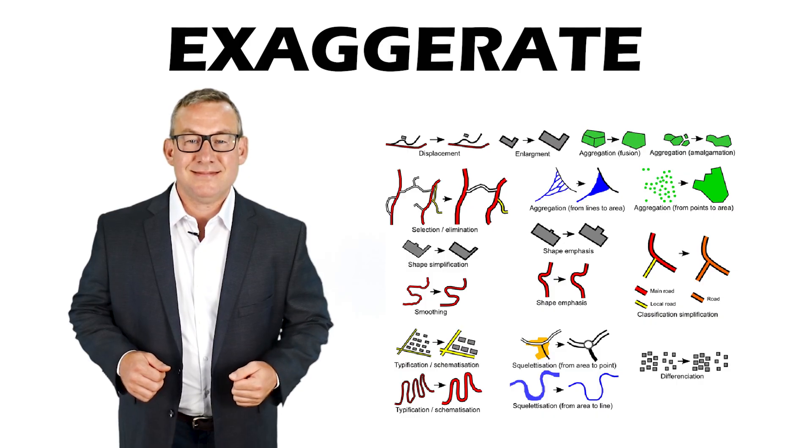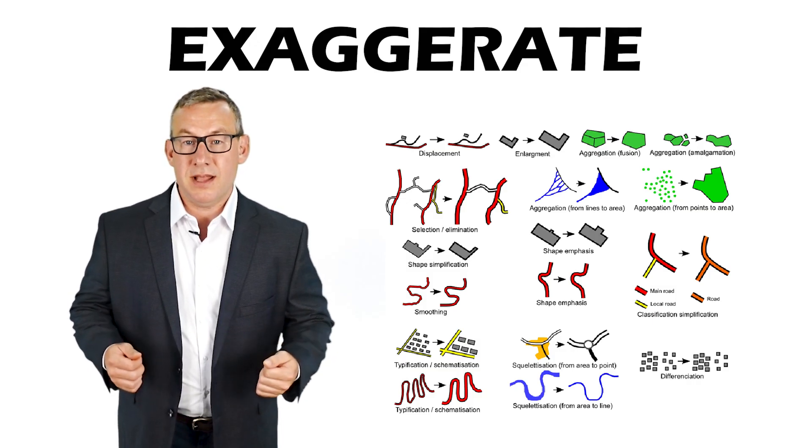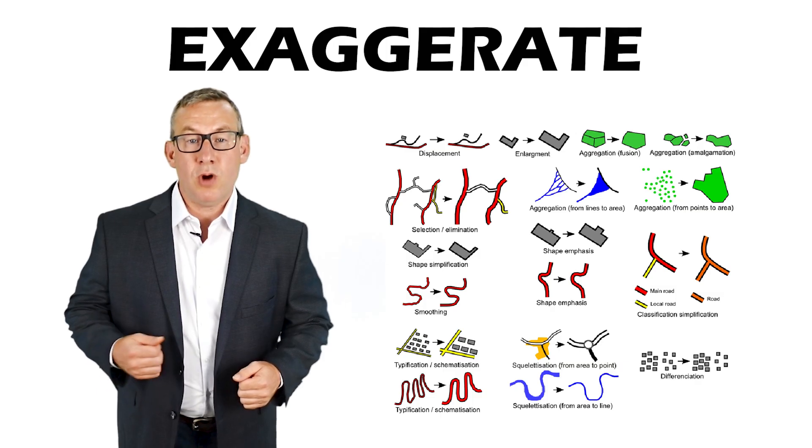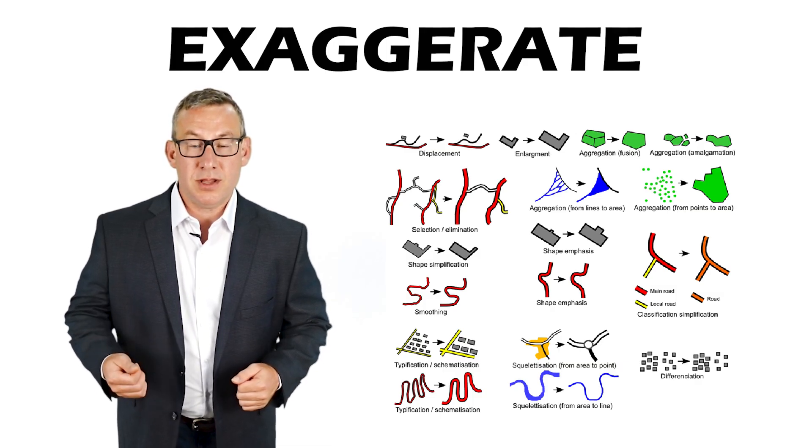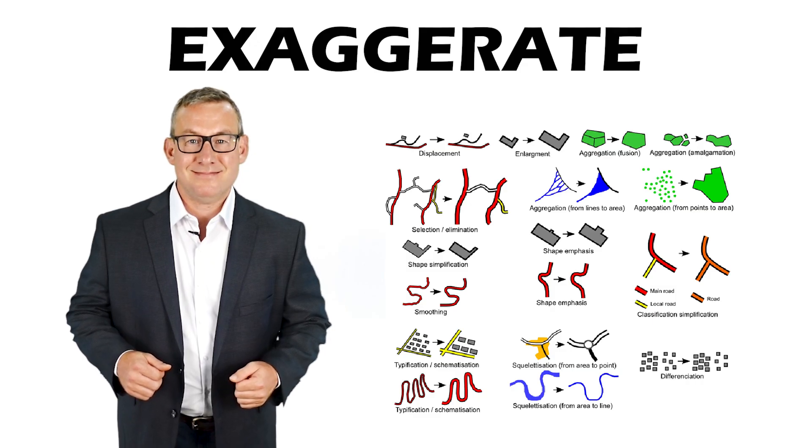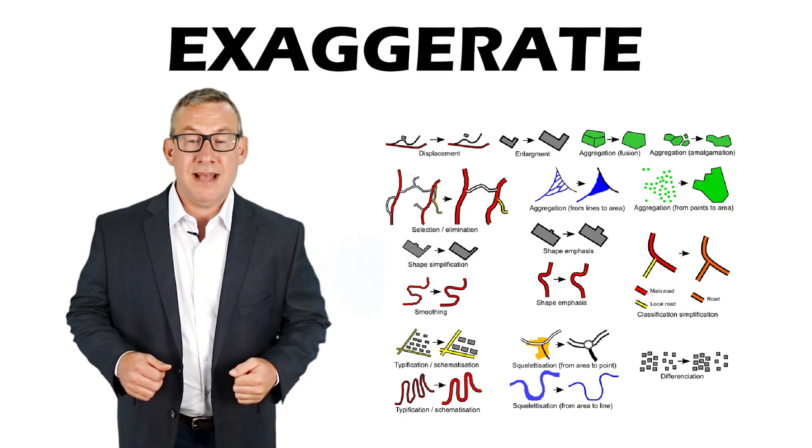Exaggerate makes features larger than they are. For example, representing roads with lines thicker than the roads really are on a small-scale map. Exaggerate is also known as emphasis.